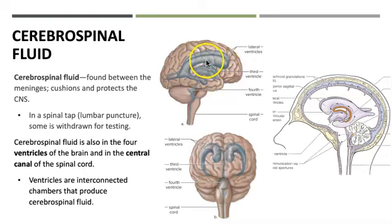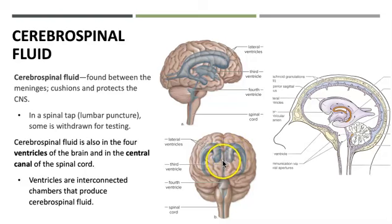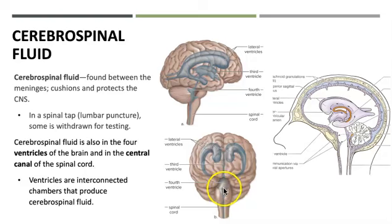We have our lateral ventricles — two on each side, C-shaped or horseshoe-shaped. They meet in the center to create a third ventricle, and another canal brings us down to the fourth ventricle. From there, cerebrospinal fluid travels down what we call the central canal of the spinal cord, allowing it to circulate around the spinal cord as well.